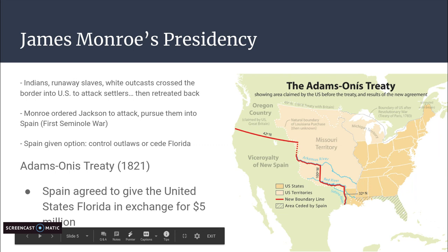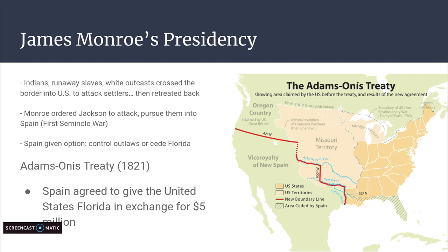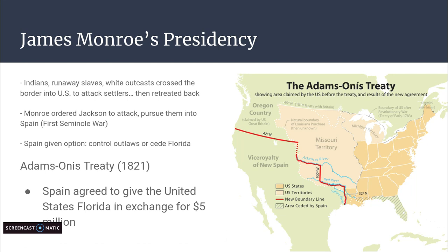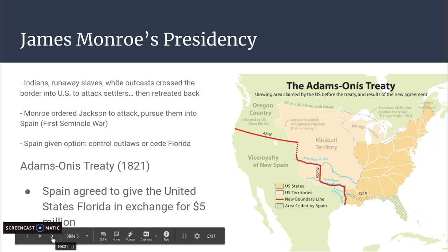Andrew Jackson kept going into Spanish territory, so the United States gave Spain two options: either control your outlaws — which Spain could not do, as they were fighting in many areas in Central and South America and lacked the manpower — or cede Florida to the United States. This led to the Adams-Onís Treaty of 1821, in which Spain agreed to give the United States Florida in exchange for $5 million.